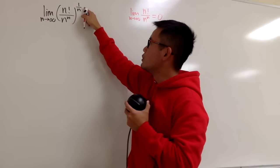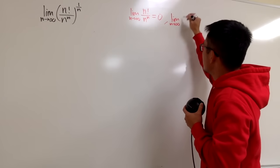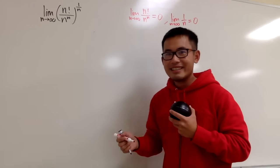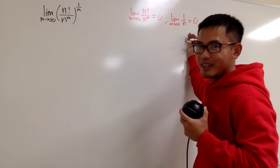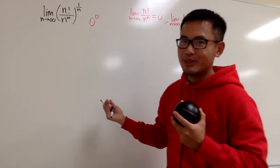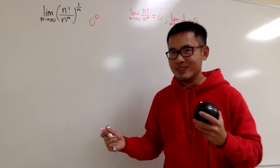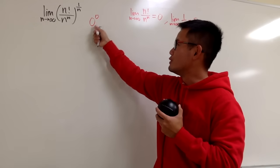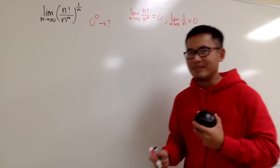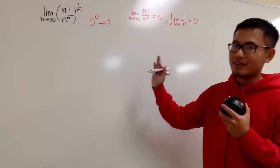If we look at the power, which is just 1 over n, when n goes to infinity this is equal to 0 as well. Combining these two together, we know this is actually a 0 to the 0 situation. Can we draw any conclusion with this? No — especially because when we have 0 to the 0, it can be really crazy. It can be 1, it can be 0, it can be e, it can be any number.